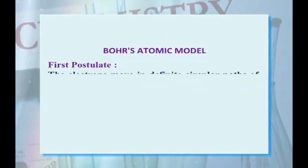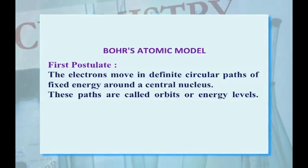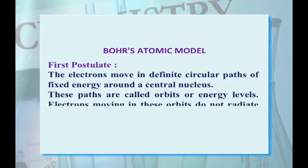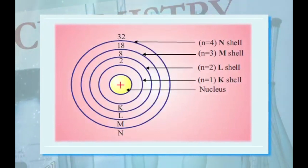First postulate: The electron moves in defined circular paths of fixed energy around a central nucleus. These paths are called orbits or energy levels. Electrons moving in these orbits do not radiate electromagnetic radiation. Such orbits are also called stationary states. Here the different stationary states are indicated and their different shells or orbits are represented by the symbol K, L, M, N.